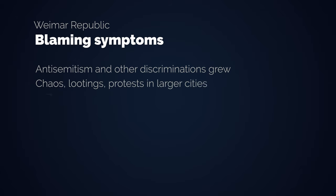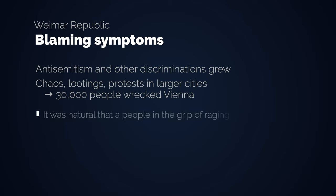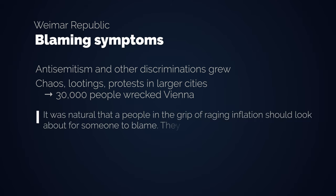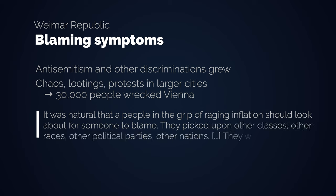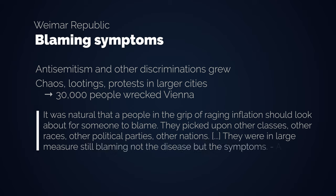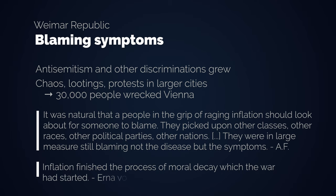In Vienna, a group of 30,000 looted food shops and other stores while wrecking the whole city. It was natural that a people in the grip of raging inflation should look about for someone to blame — they picked upon other classes, other races, other political parties, other nations. They were in large measure still blaming not the disease but the symptoms. Inflation finished the process of moral decay which the war had started. And we haven't even reached the stage of hyperinflation yet.